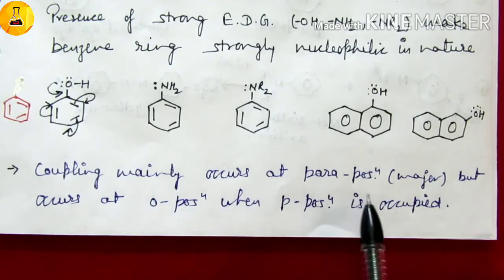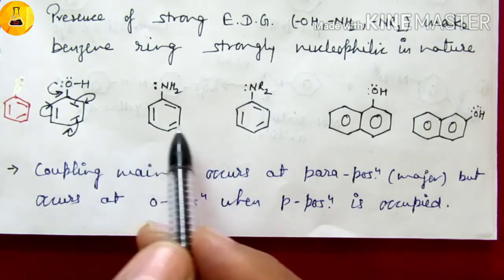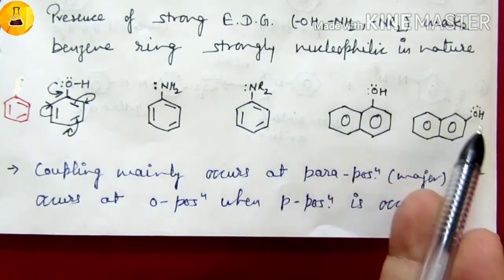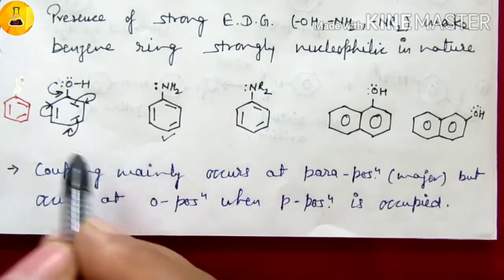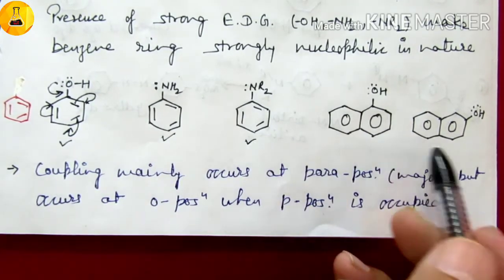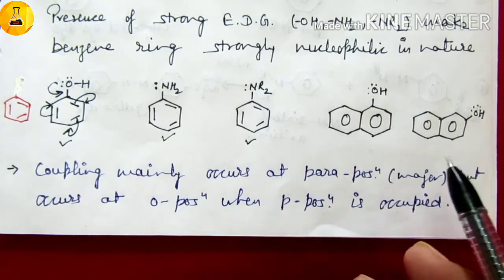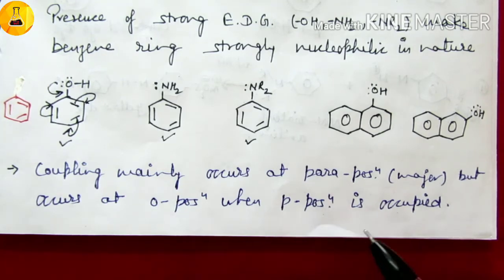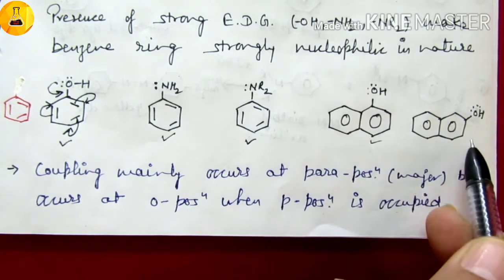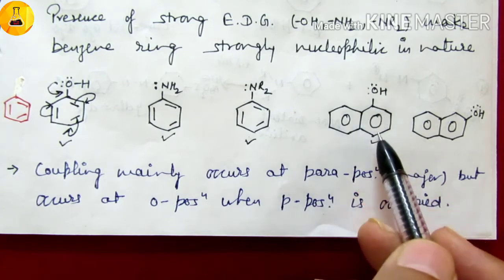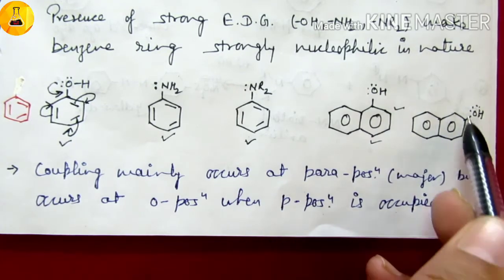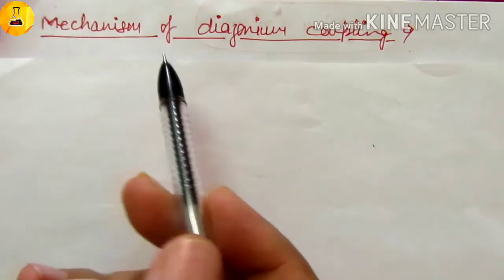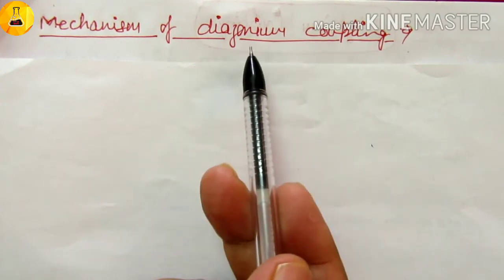Coupling mainly occurs at the para position, but occurs at the ortho position when the para position is occupied. For all aromatic compounds with strong electron-donating groups, reaction goes to ortho and para positions, but mainly the major product comes from the para position. In some derivatives, ortho product is also obtained but only when the para position is blocked by a prior group. In alpha-naphthol, reaction gives major product from one position and minor from another; in beta-naphthol, reaction goes ortho because its para is blocked — we will discuss this further.